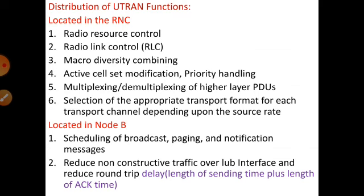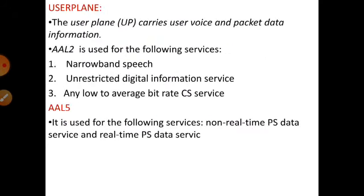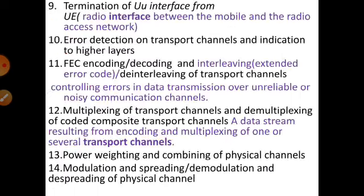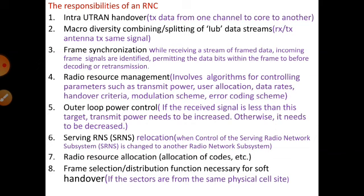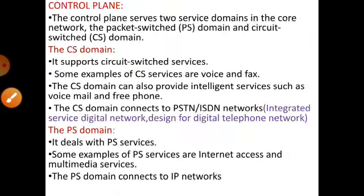Functions located in the RNC include: radio resource control, radio link control, macro diversity combining, cell modification, priority handling, multiplexing and demultiplexing of RLC PDUs, and selection of appropriate transport format for each transport channel depending upon the source rate. We already saw these points in the previous UTRAN slide covering the responsibilities of the RNC.